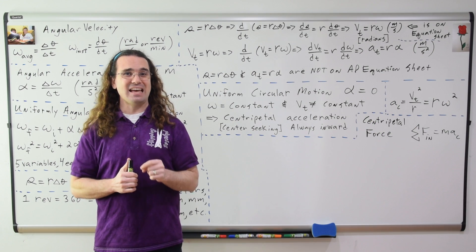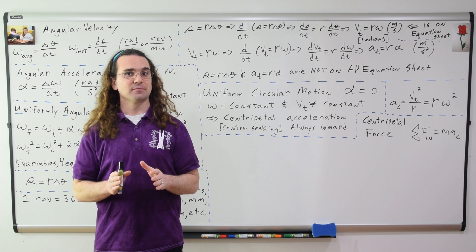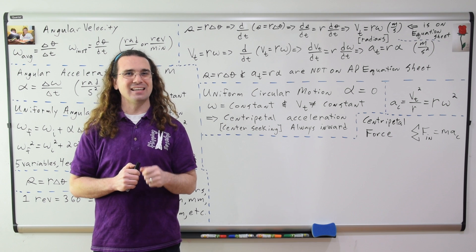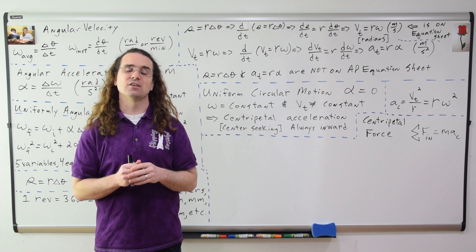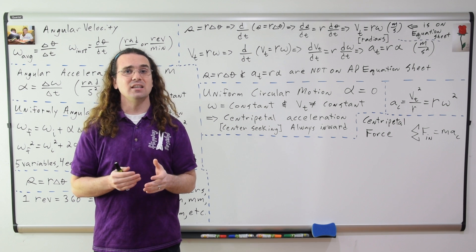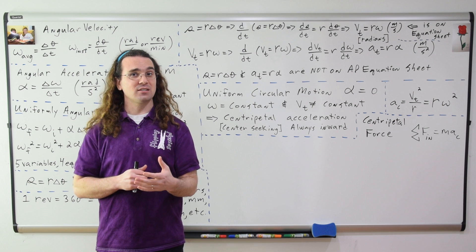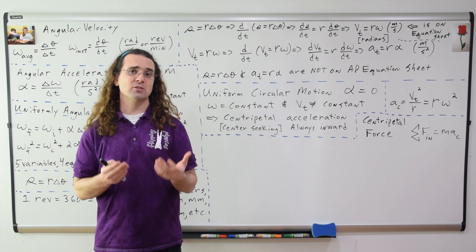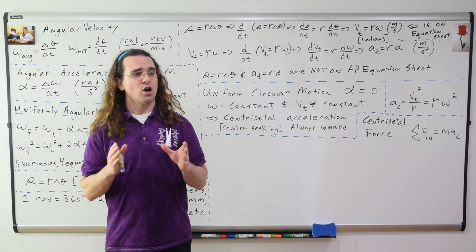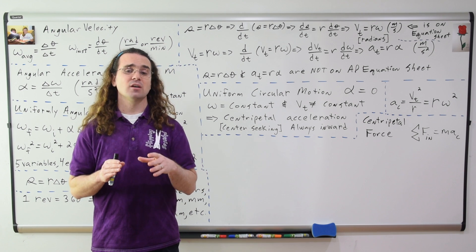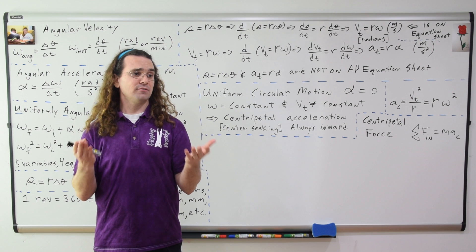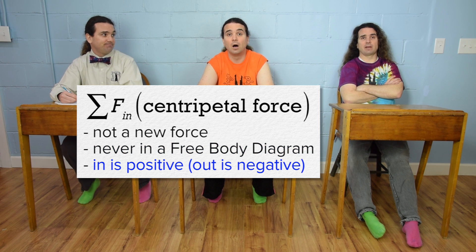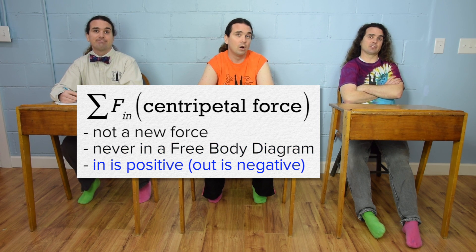The centripetal force is the net force in the inward direction. When an object is moving along a circular path, there must be a net force acting inward on the object — that net force in the inward direction is called the centripetal force. It equals, according to Newton's second law, mass times the centripetal acceleration. Remember: it's not a new force, so it's never in a free body diagram. The inward direction is positive and therefore the outward direction is negative.